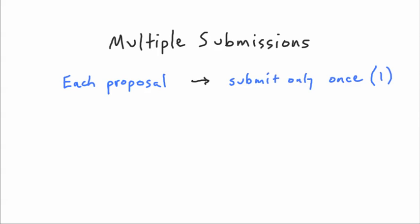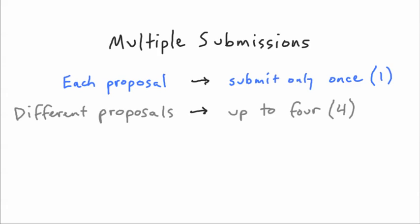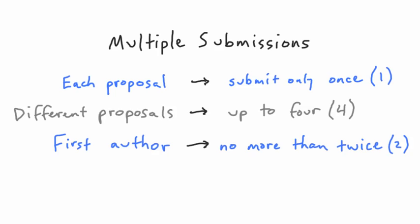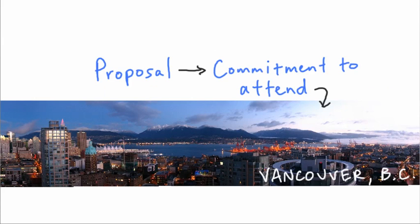Concerning multiple submissions, each proposal may be submitted only once, but you're allowed to be involved in up to four different proposals. However, you may be the first author no more than twice. When you submit your proposals, you're making a commitment to attend the Annual Meeting in Vancouver should you be selected.